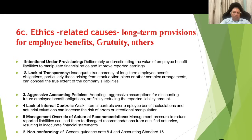Ethics-related causes for long-term employee benefit provisions: intentional under-provisioning — deliberately underestimating the value of employee benefits liabilities to manipulate financial ratios and improve reported earnings; lack of transparency; aggressive accounting policies — adopting aggressive assumptions for discounting future employee benefit obligations to artificially reduce the reported liability; lack of internal controls; management override of actuarial recommendations — management pressures to reduce reported liabilities can lead to disregarding recommendations from qualified actuaries, resulting in inaccurate financial statements non-conforming to guidance note 8.4 and Accounting Standard 15.